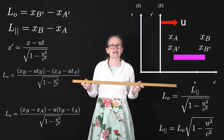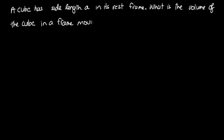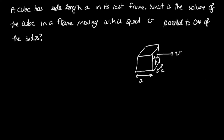Let's have a look at an example problem. A cube has side length a in its rest frame. What is the volume of the cube in the frame moving with speed v parallel to one of the sides? Let's start by drawing a diagram — a cube with sides of length a, moving in a frame parallel to one of its sides with speed v. We're viewing this from the S frame, and we'll call the axis along which it's moving the x-axis.